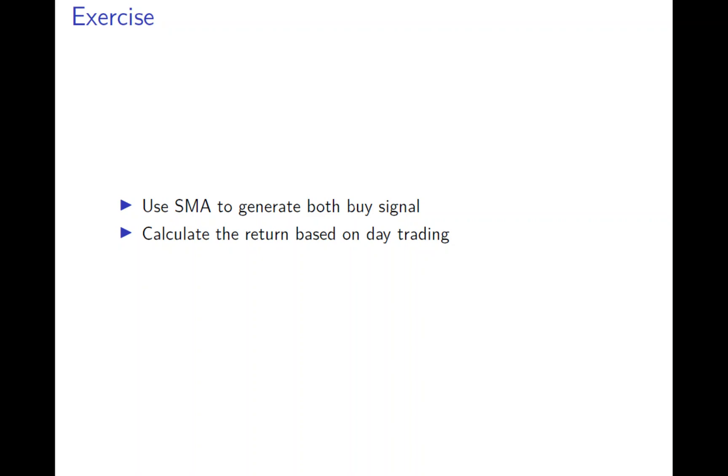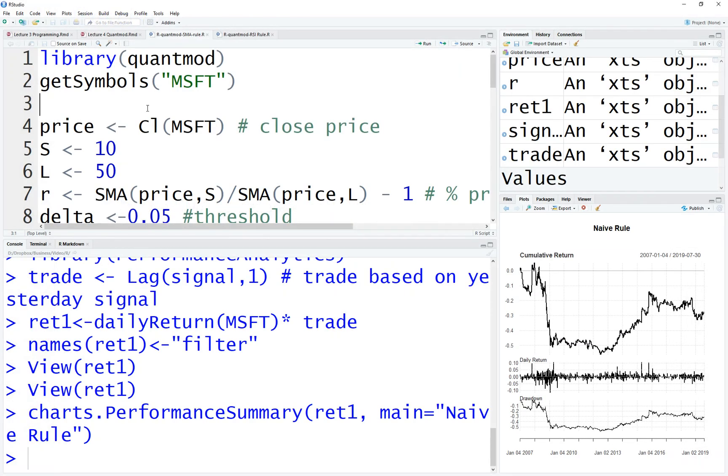Before we do the simple filter rule, let's do the SMA rule—Simple Moving Average. Again, I just want to generate a buy signal, so let's see the code here. Again, it's very similar using the library.